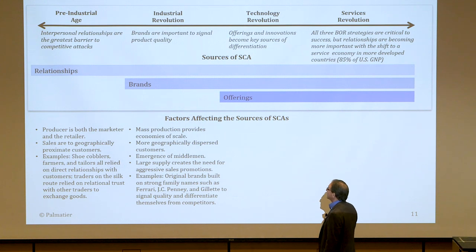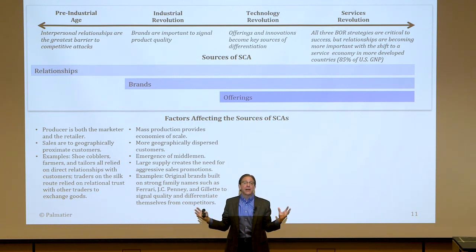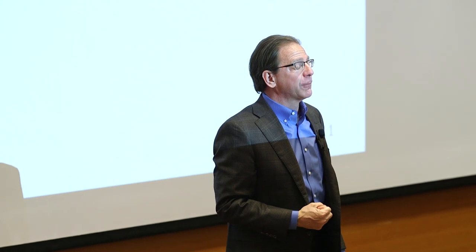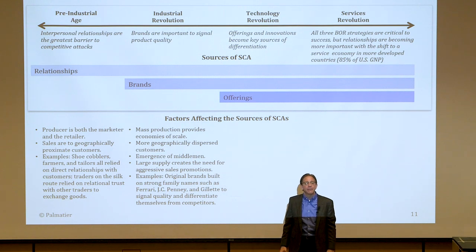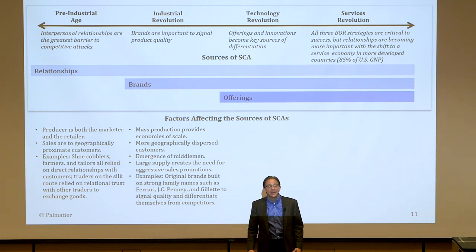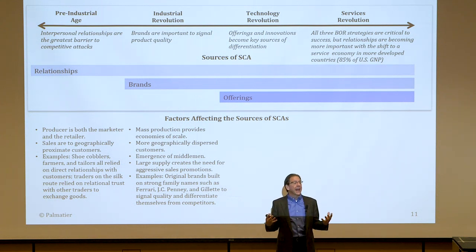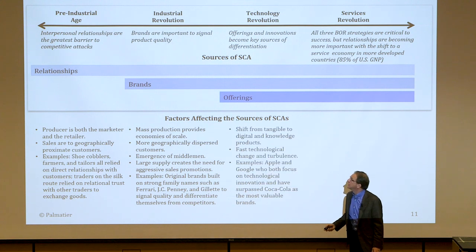But then we went into the industrial revolution. Mass production started. Factories were producing large amounts of goods and had to distribute them over a large area. Because they were distributing, no longer did they know the person they were selling to or buying from. So relationships became less important and brands became important. All the original brands were just people's names — they were just extending their relationship. If you look at Ferrari, JCPenney, Gillette, these were companies that originally had relationships with their customers, but then they grew so big they turned their name into a brand and said they'll stand behind it. So brands became really important in the industrial revolution.